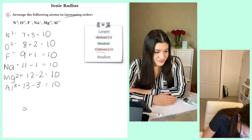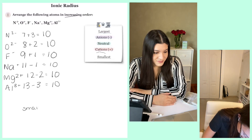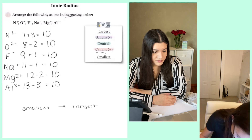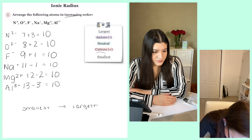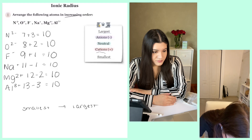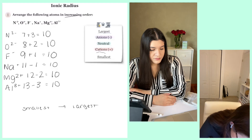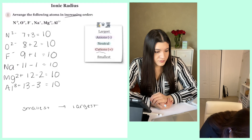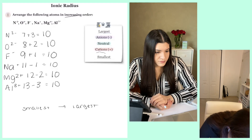I'll just draw my little thing — smallest to largest. The cations are the ones with the pluses.